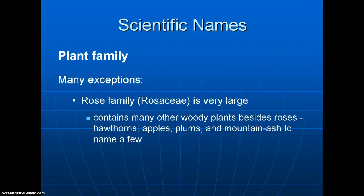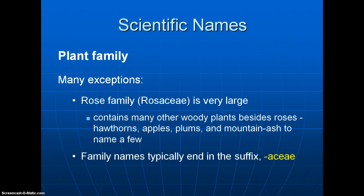There are many exceptions, though. Take the large family such as the rose family, or Rosaceae. It's very large, and you might think it just contains roses — but it also contains many other important horticultural plants, such as fruit crops like apples and plums, as well as mountain ash and hawthorns. Family names typically end in the suffix -aceae (A-C-E-A-E), which is another little trick to remember.